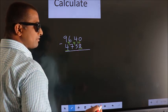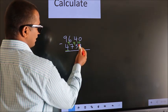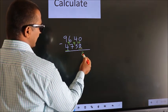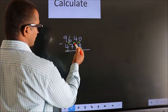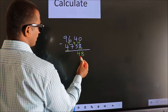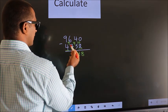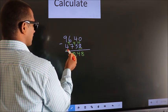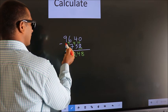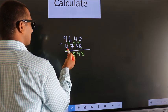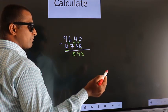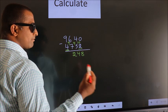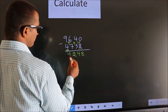Now we subtract: 10 minus 2 is 8, 9 minus 5 is 4, 9 minus 7 is 2. Now for the first digit we do 9 minus 4, we get 5. Decrease that by 1, we get 4.